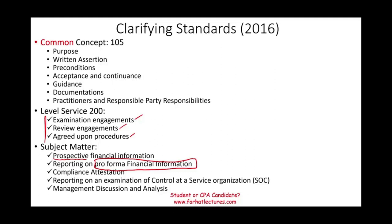Prospective financial information and pro forma financial information sound similar. In fact, I'm going to go out on a limb and tell you they are the opposite of each other. Prospective means we are dealing with the future. Pro forma financial statements — as you're going to see shortly — we are dealing with historical financial statements. So from a time perspective they're totally different: prospective is looking at the future, pro forma is looking at historical financial information.